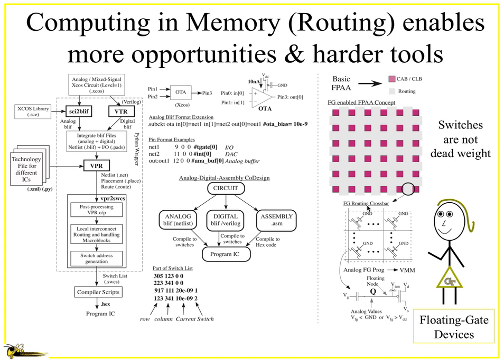There's one more wrinkle: your floating gate elements are not dead weight. With floating gate elements and a crossbar, you can actually perform vector-matrix multiplication or other computations right in the routing fabric. This makes things more complicated at several stages, because now routing is not simply routing — it's also part of the computation. This is an area where we have to be very careful about what we're putting together.